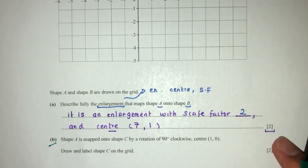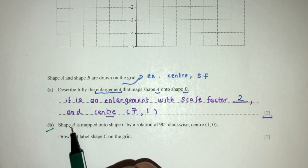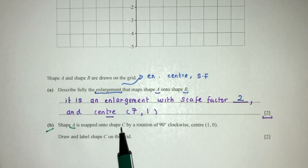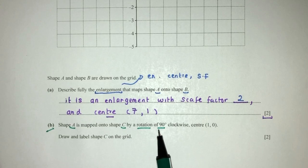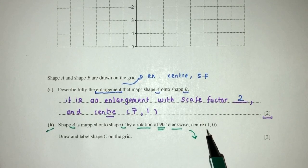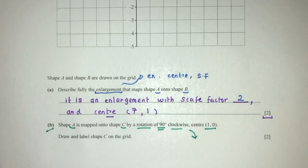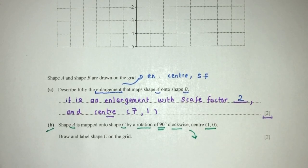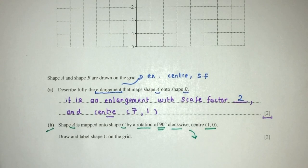For part B, shape A is mapped onto shape C by a rotation of 90 degrees clockwise with center (1, 0). There are two ways to do this: one using the matrix method and one using the diagram. Let's try both methods, starting with the diagram.